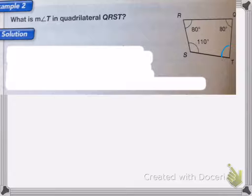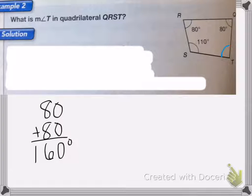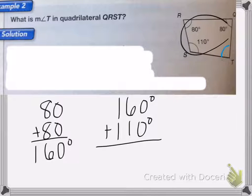Okay, so again, I know if I add up all of these angles, it has to equal 360 degrees. So I'm first going to add these up. So 80 plus 80 degrees is 160 degrees. Okay, and I'm going to do 160 degrees and add that to 110 degrees. Okay, that's my three sides here. And that's equal to 270 degrees.